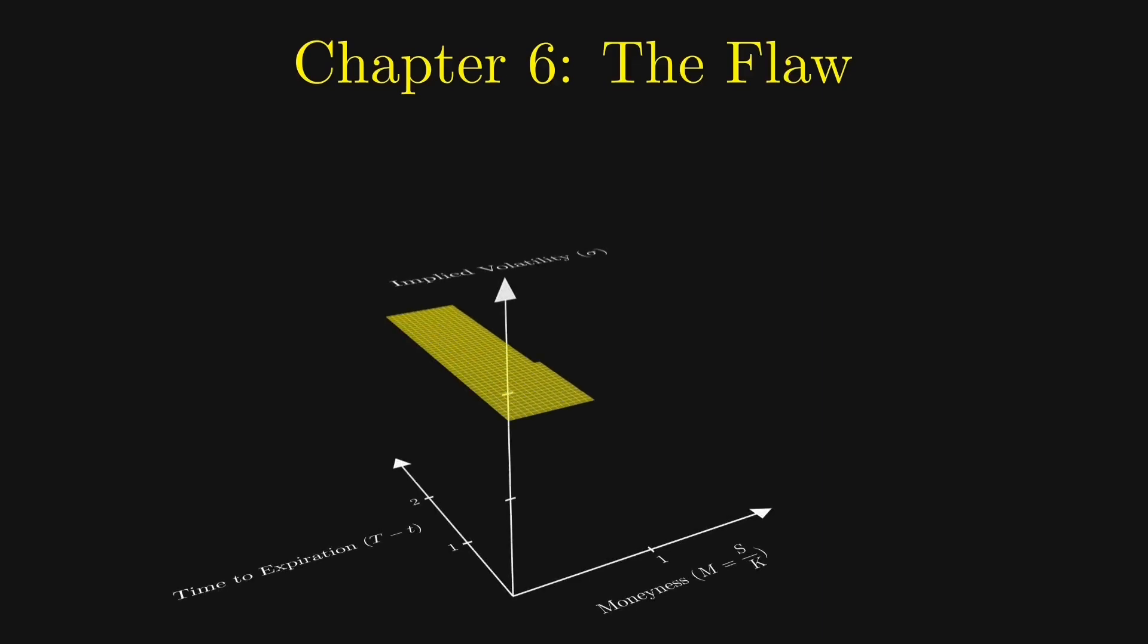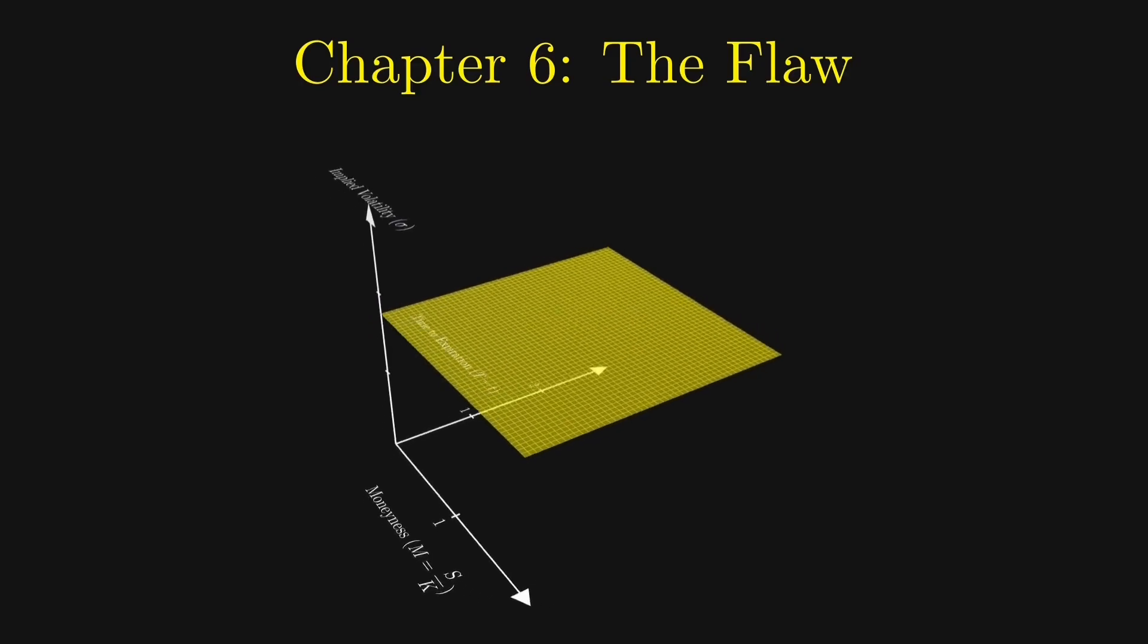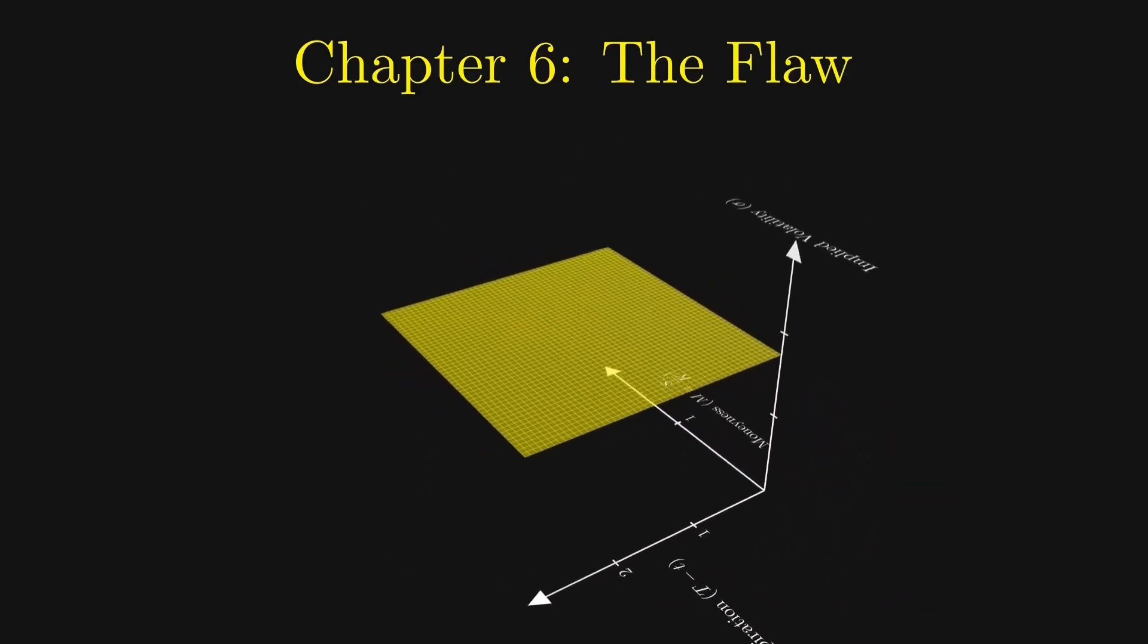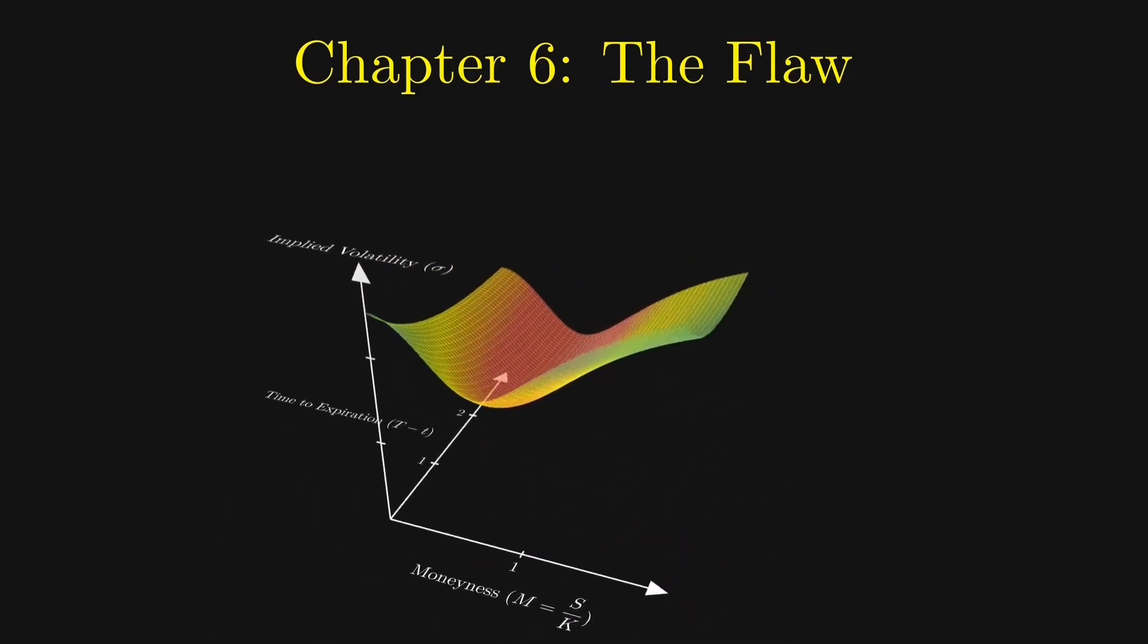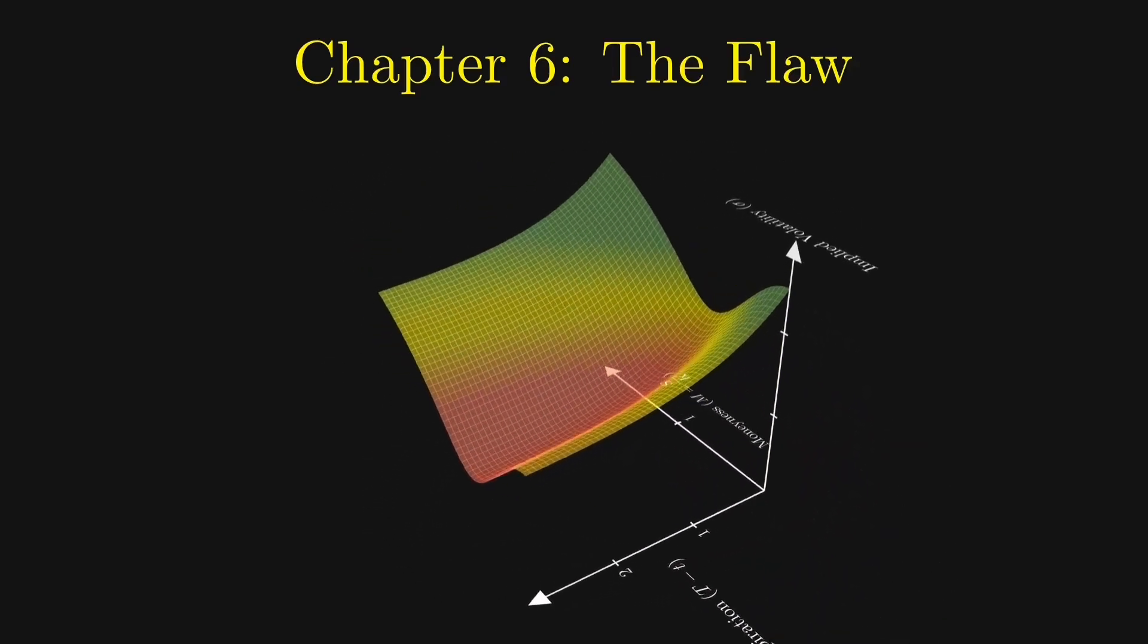We've spent the whole video trying to derive this formula, but what if I tell you this formula doesn't even work? In our model, we assumed a single parameter sigma that controls the volatility of the stock. If we plot the volatility against the time of expiration and the moneyness, which is just a ratio between the stock price and the strike price, we are assuming a flat surface. But if we use option prices in the market to reverse engineer the volatility levels at different times and moneyness levels, we get a surface that looks like this. We call this the implied volatility surface.